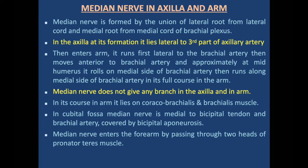In its course in the arm, the median nerve lies on the coracobrachialis and brachialis muscles. In the cubital fossa, it is medial to the bicipital tendon and brachial artery, covered by the bicipital aponeurosis. The median nerve enters the forearm by passing through the two heads of the pronator teres.